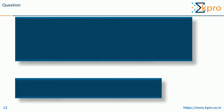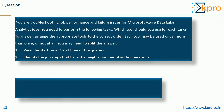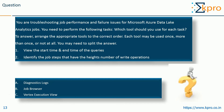As part of this video, here is another question: You are troubleshooting job performance and failure issues from Microsoft Azure Data Lake Analytics jobs. You need to perform the following tasks — which tool should you use for each task? Arrange the appropriate tools in the correct order; each tool may be used once, more than once, or not at all. Task 1: View the start time and end time of the queries. Task 2: Identify the job steps that have the highest number of write operators. The options are: Diagnostics Logs, Job Browser, and Vertex Execution View. I will provide the answer in the next video — you can guess and put your answer in the comments.